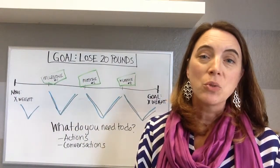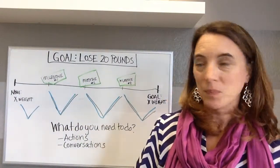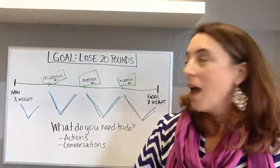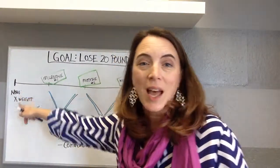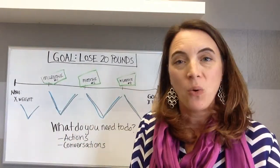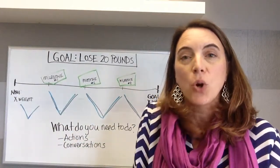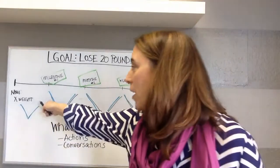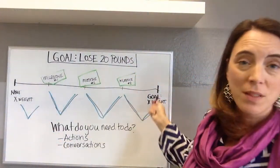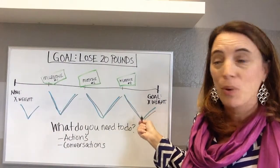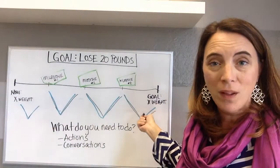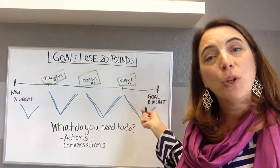Then create a timeline — just a simple horizontal line across the page. On one side you put 'now': where are you right now for this goal, what is your current reality? For this example, you write your current weight.